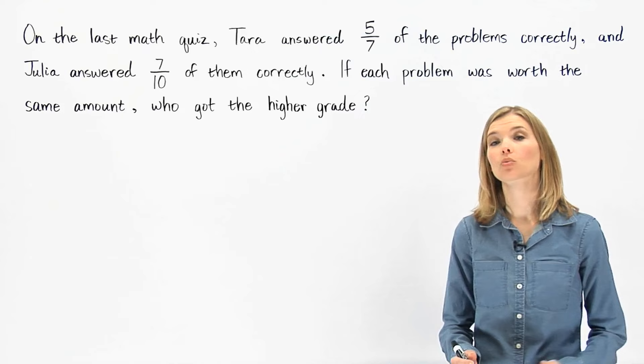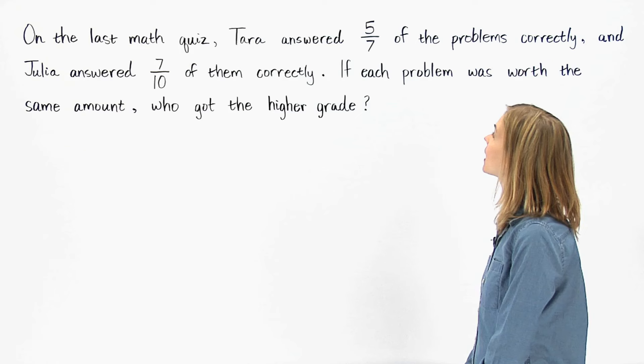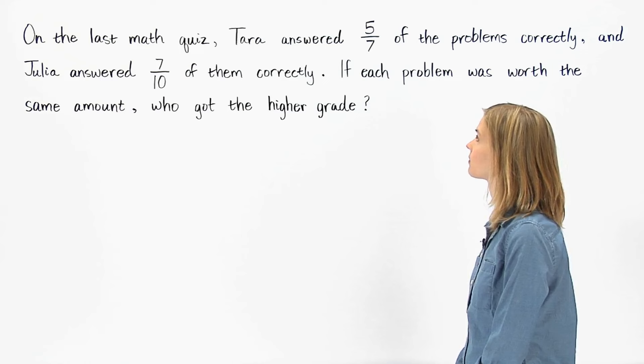On the last math quiz, Tara answered five-sevenths of the problems correctly, and Julia answered seven-tenths of them correctly. If each problem was worth the same amount, who got the higher grade?